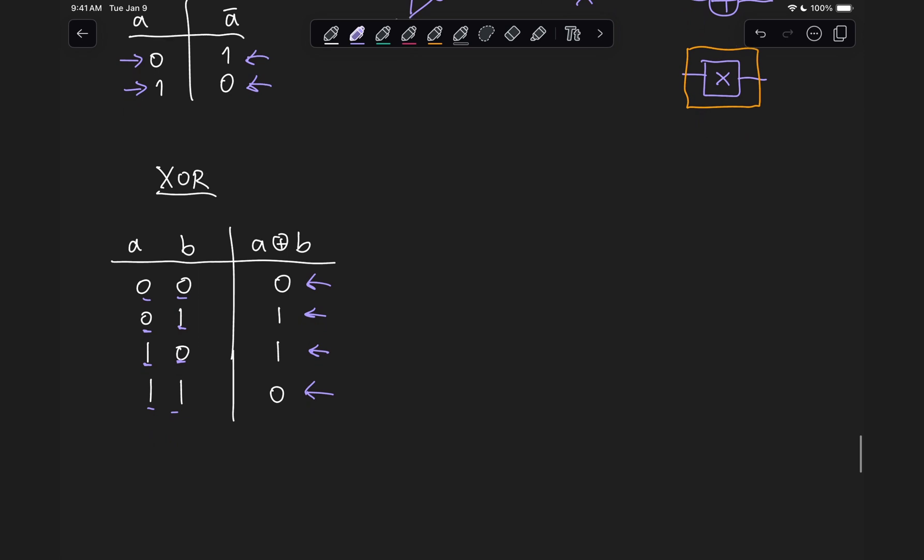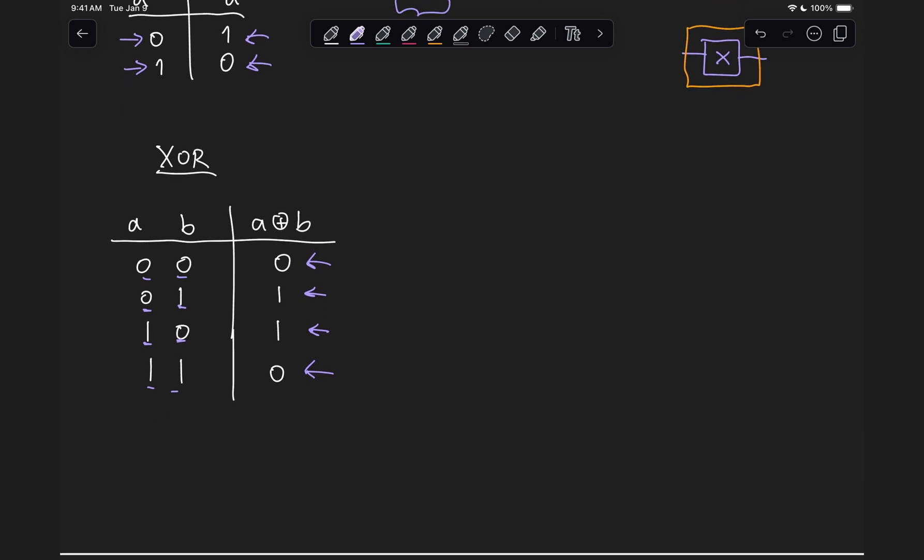An easy way to make this gate reversible is by adding redundancy. One thing we could do is add an additional output that basically matches one of our inputs. If we were to just simply pass our input A straight to the output, then now for each of the possible combinations of the output, the input that we get is unique. Notice how if we have zero zero at the output, we know for sure the input was zero zero. If we have zero one, then we know the input was zero one. If we have one one at the output, we know the input was one zero. And if we have one zero at the output, we know the input was one one.